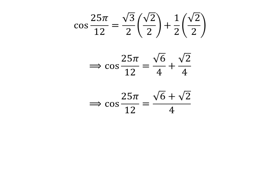The denominator of both fractions in the above expression is the same, so cosine of 25 times pi upon 12 is equal to square root of 6 plus square root of 2 upon 4. Taking out the common factor square root of 2 in the numerator gives us cosine of 25 times pi upon 12 is equal to square root of 2 times open bracket square root of 3 plus 1 close bracket upon 4.